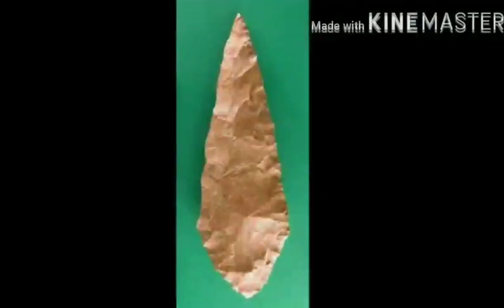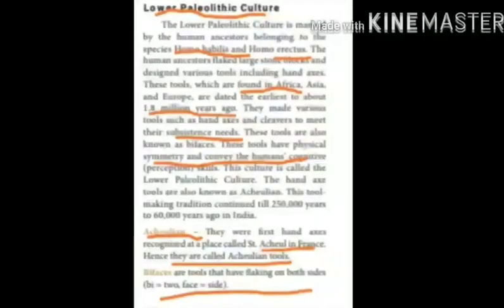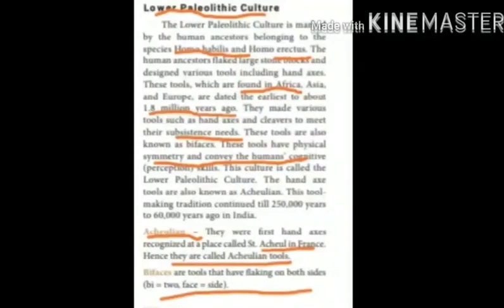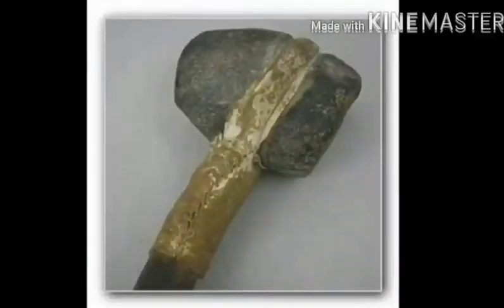They made various tools such as hand axes and cleavers to meet their subsistence needs. These tools are also known as bifaces. These tools have physical symmetry and convey the human's cognitive skills. This culture is called the Lower Paleolithic Culture. The hand axe tools are also known as Achulian. This tool-making tradition continued till 2,50,000 years to 60,000 years ago in India.